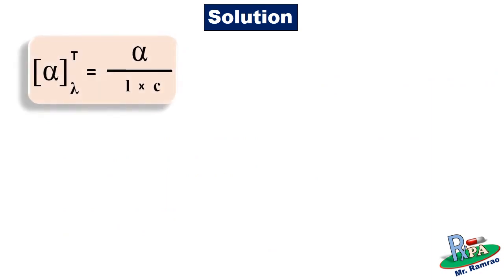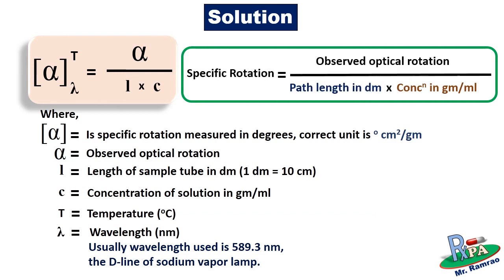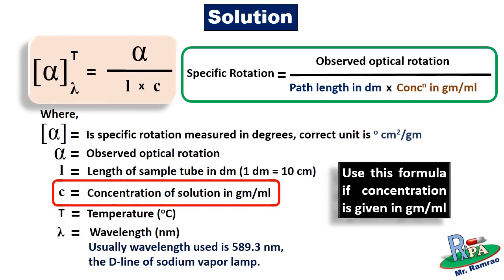If the question asks you to calculate specific rotation of a solution where concentration is given in grams per mL, then use this formula. The only change in this formula is that density is replaced by the concentration term. Density and concentration both have the same unit, so use this formula if concentration is given in grams per mL. It will become clear once you go through the questions we are going to solve.